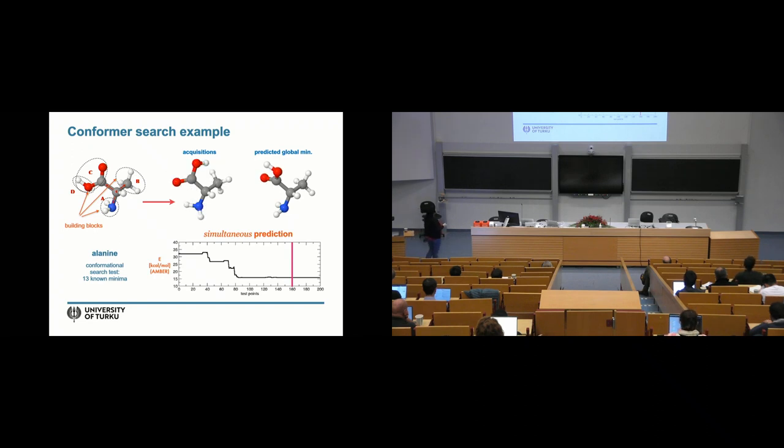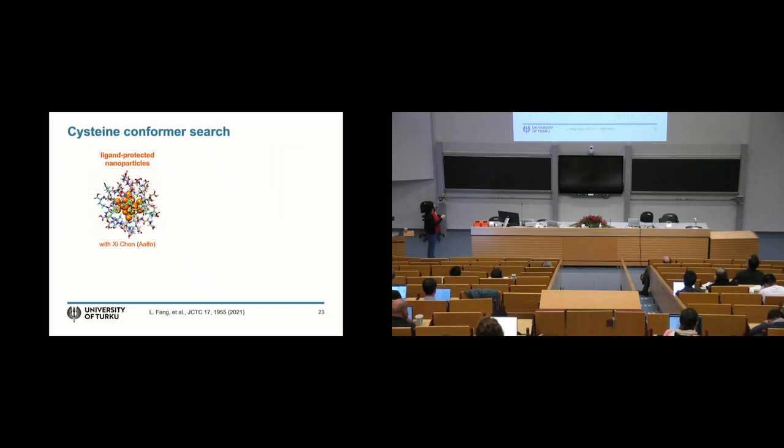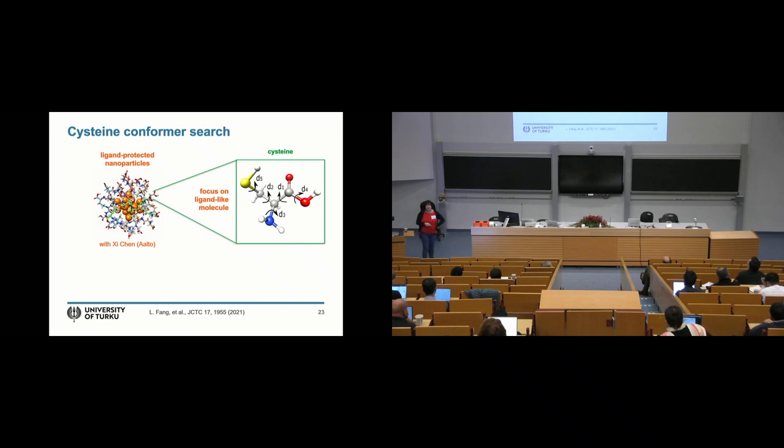But after we solved this problem, we knew we could go to more complicated systems, which is this, which is what our functional materials that our colleagues are interested in for drug delivery. Here we had the cysteine molecule, which has five degrees of freedom, but it's very similar to what I've shown before. And here we really went up to high levels of theory to understand how different quantum chemistry methods get the ordering of different conformers differently. This is a known problem.